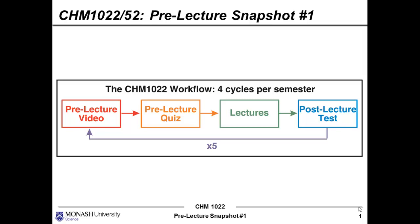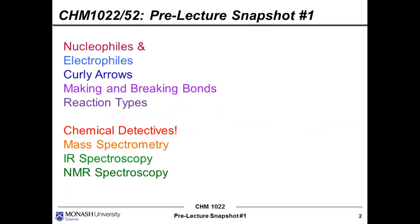The quiz and the test are both on the Moodle website. The quizzes tend to be pretty easy; the test is a little bit more challenging to see how much of the material you've understood. Throughout the semester there are four of these cycles. This first snapshot actually relates to weeks two and three of semester.